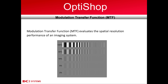It is used to evaluate the ability of the system to transfer contrast from the specimen — the UUT, which may be a lens, a lens assembly, or a camera — to the intermediate image plane.